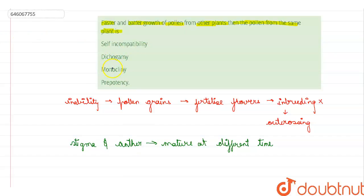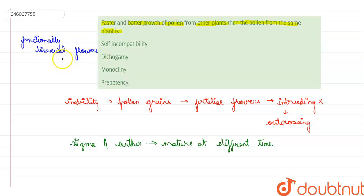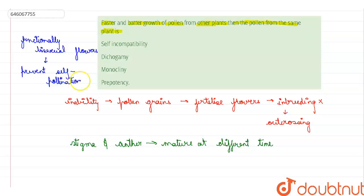The third option is monocliny. Monocliny refers to a species with functionally bisexual flowers — they are hermaphrodite. Some special devices are present for preventing self-pollination. However, monocliny does not say anything about the faster and better growth of pollens, so this option is also incorrect.